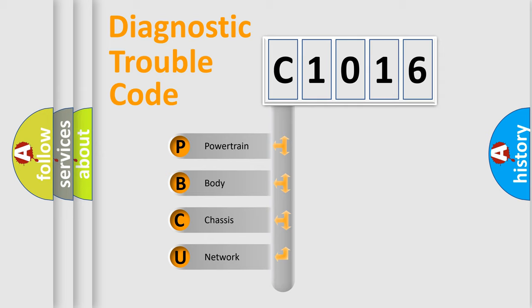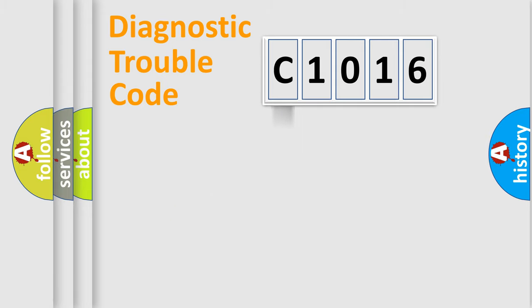We divide the electric system of automobiles into four basic units: Powertrain, Body, Chassis, and Network. This distribution is defined in the first character code.